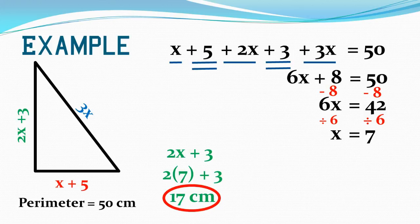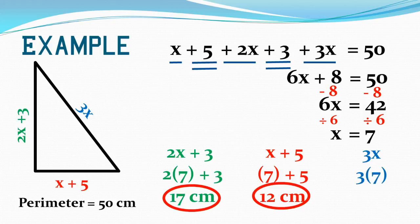I'm going to take my next algebraic expression, x plus 5. 7 plus 5 gives me 12 centimeters. Last but not least, 3x. That's 3 times 7, which is 21 centimeters. If I wanted to double check this, 17 plus 12 plus 21 does equal 50 centimeters. So my perimeter ends up adding up.